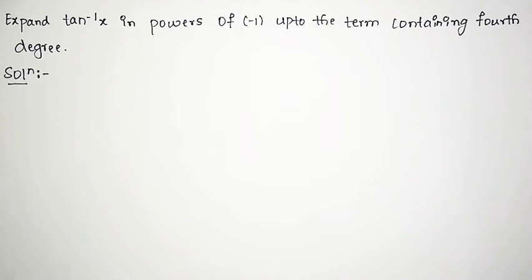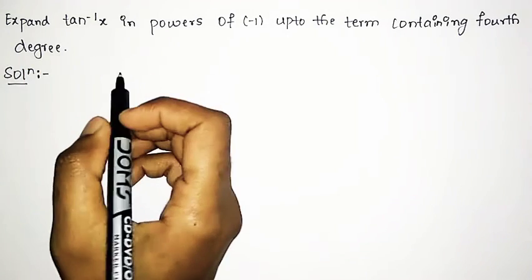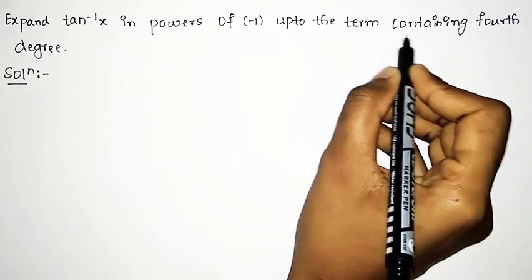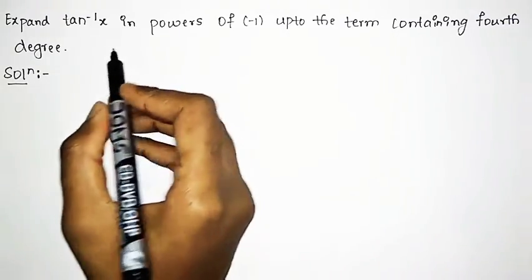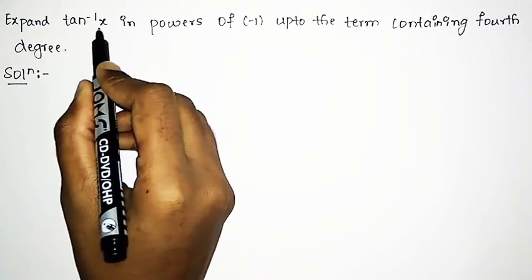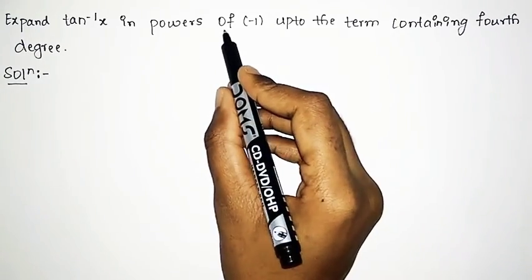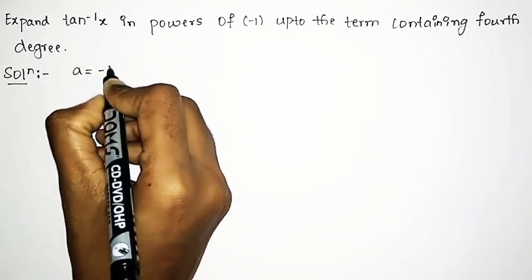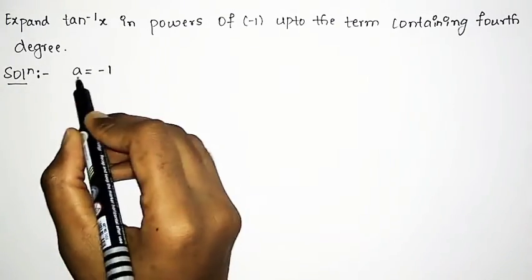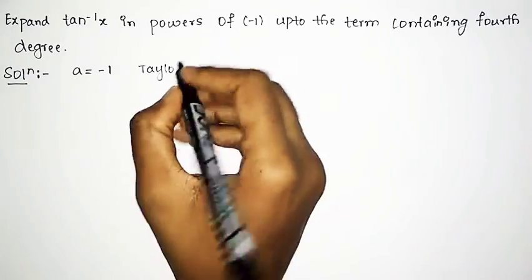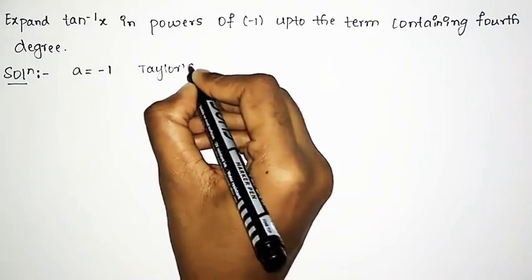Hello friends, welcome to our channel. Today we shall discuss our next problem: expand tan inverse x in powers of (x minus (-1)) up to the term contained in the 4th power. Here the given function f of x is tan inverse x, and since a is given as minus 1, we will use the Taylor series equation.